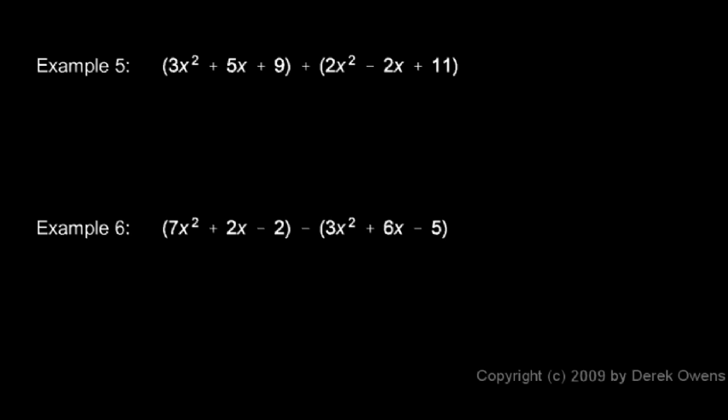Example 5 looks long, but it's really fairly easy. We just have two things added together: 3x² + 5x + 9 and 2x² - 2x + 11. These are added together, so we can simply rewrite them both and drop the parentheses.